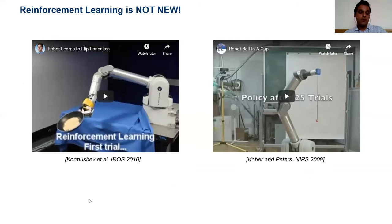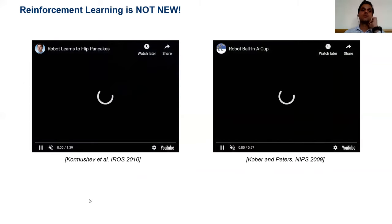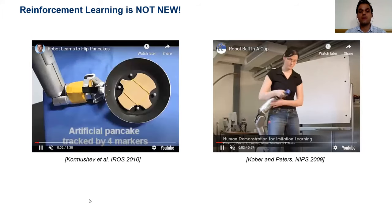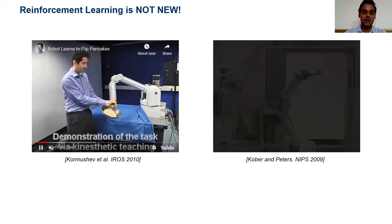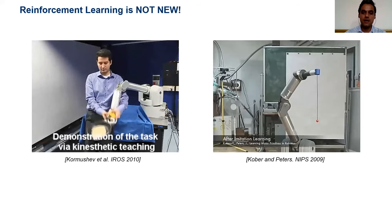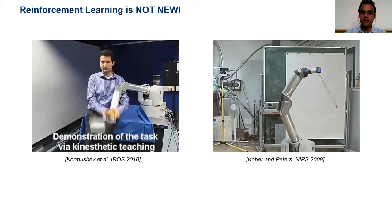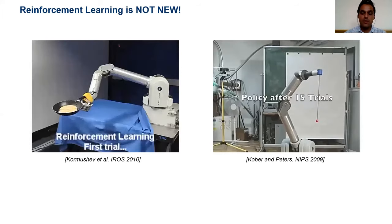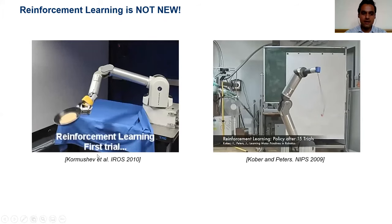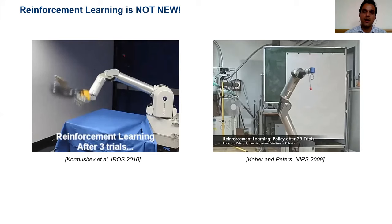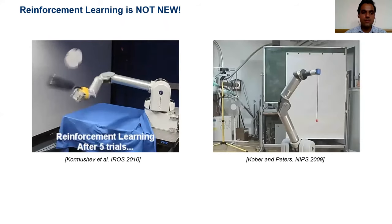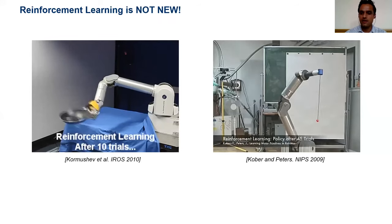Reinforcement learning is actually not new — even though it's currently a bit of a hype. Both of these videos are more than ten years old. In one case, the robot is learning to flip a pancake using reinforcement learning, and in the second case a robot is learning the kids' game of ball-in-a-cup. In both cases, a human demonstrates the behavior and then the robot learns through trial and error by interacting with the environment. It takes approximately 50 trials in one case and 100 in the other.